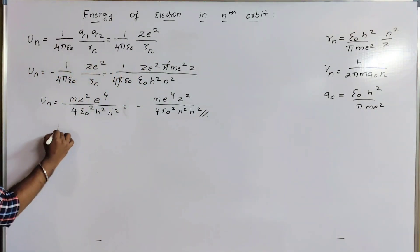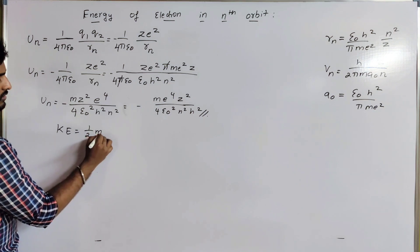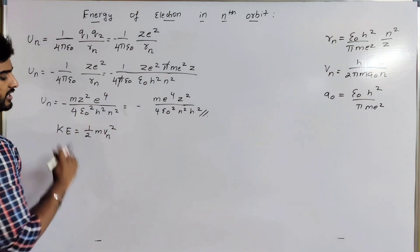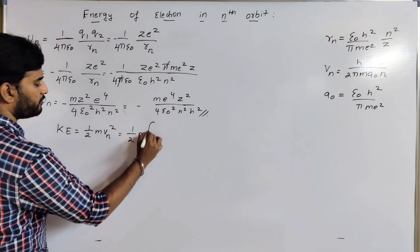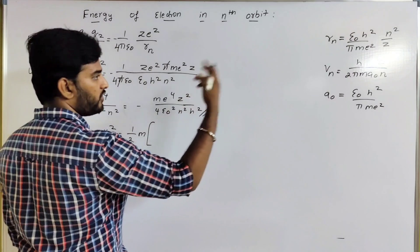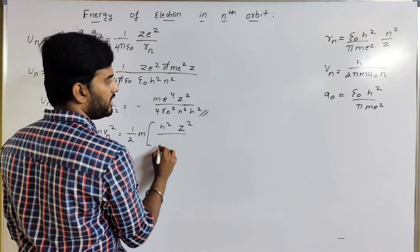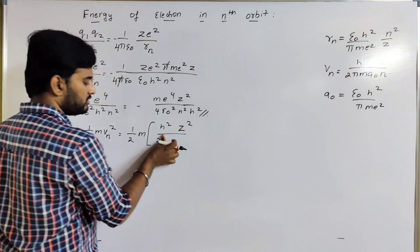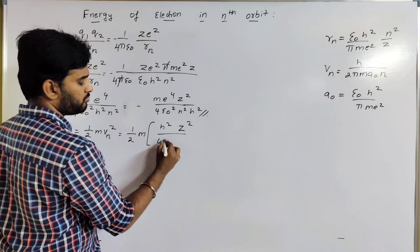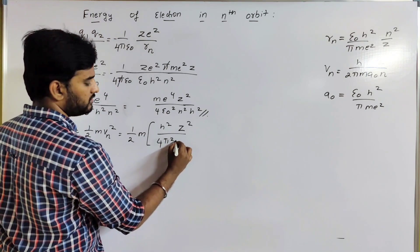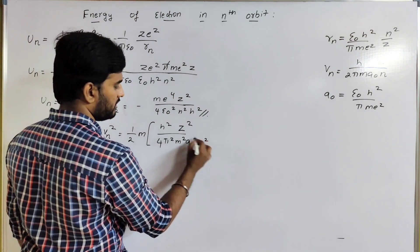Now, kinetic energy equals one half mv squared. Substituting vn squared, we get one half m times vn squared equals m h squared z squared divided by 2, with 2 squared giving 4, pi squared, m squared, a₀ squared, n squared.